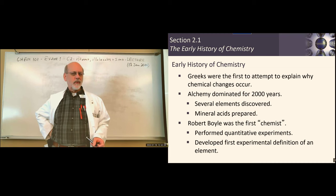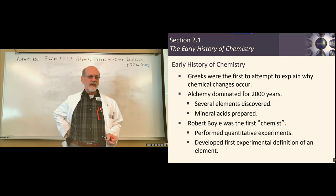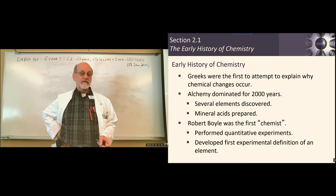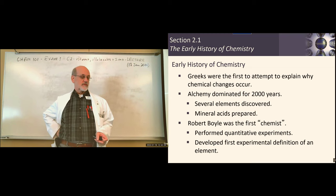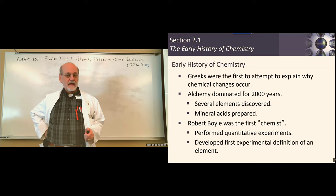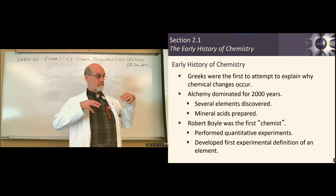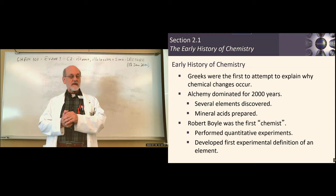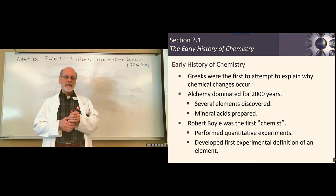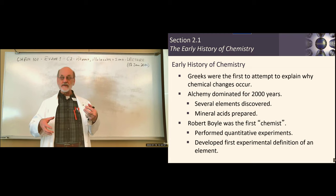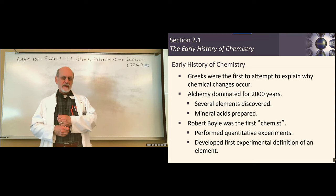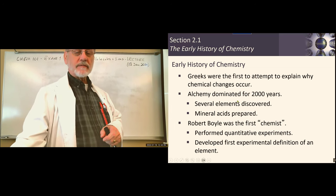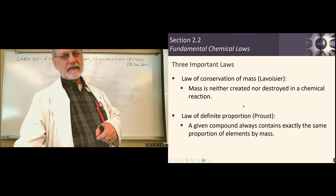Then comes Robert Boyle, considered the first experimental chemist. He was an Englishman who lived in the 17th century. He actually performed what we would consider experiments: he'd ask a question, propose an answer — which we call a hypothesis — and then devise an experiment to test it. He also offered the first definition of an element.